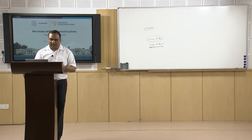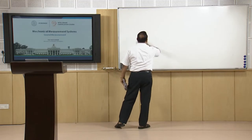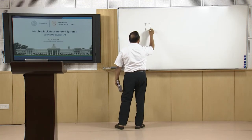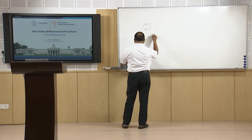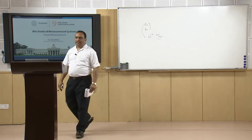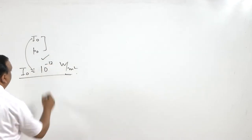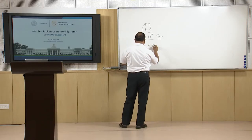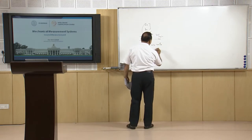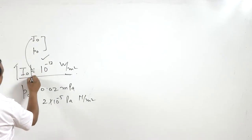It is standard practice in acoustic measurement to relate sound intensity and sound pressure to certain reference values I₀ and p₀. The reference value for intensity is 10⁻¹² W/m², which is the energy dissipation reference value. All sound energy will be compared with this reference value. For pressure, the reference value is 0.02 millipascal, or 2×10⁻⁵ Pascal (N/m²). These reference values are used for finding the intensity or magnitude of sound.